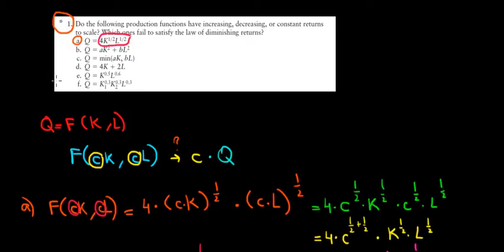Let's work on part C in this video. What we have here is a production which is the minimum between a times K and b times L, so we can see that we have an example of a perfect complement.